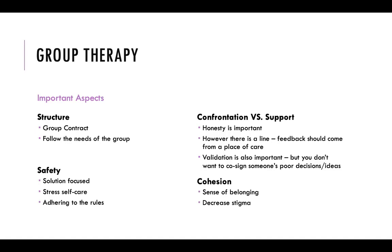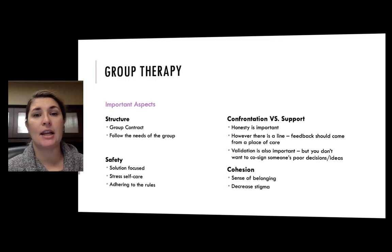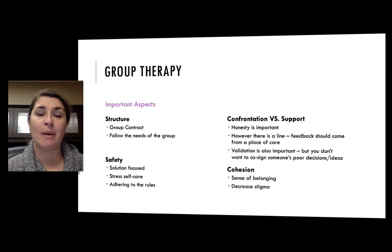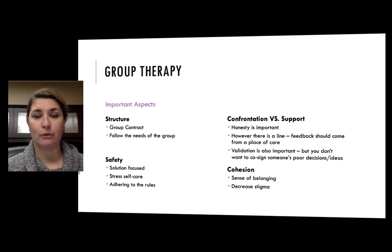For safety, the professionals create a set of rules and may allow the group members to help create these rules. But once created, the group must follow the rules. Each group typically starts with the review of the rules and an acknowledgement for each member that they agree to the following rules. For example, I used to facilitate an eating disorder group and one of the rules that the facilitators and group members came up with was that we don't talk about losing or gaining weight in the group. This was a good way to reduce any triggers within the group.